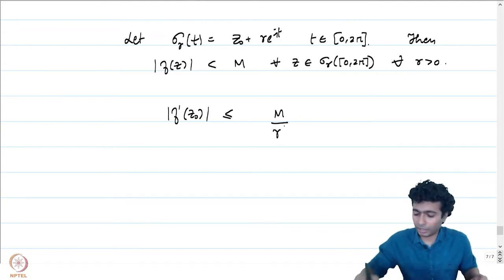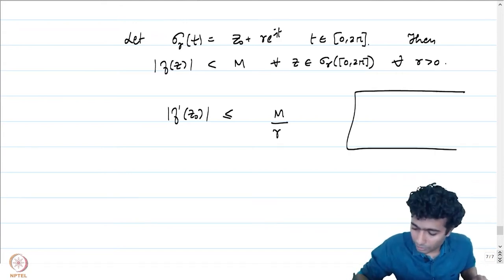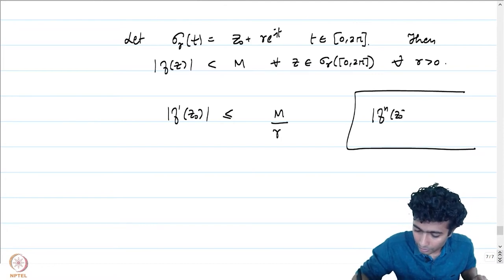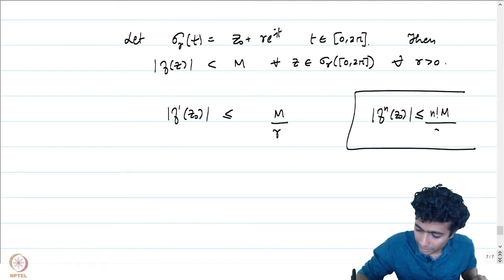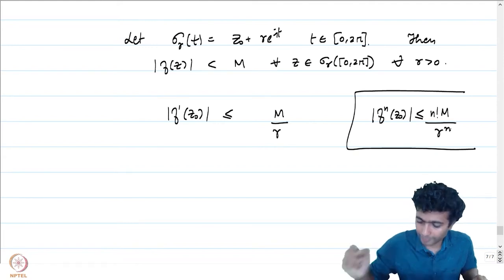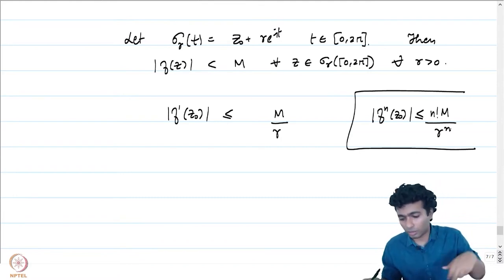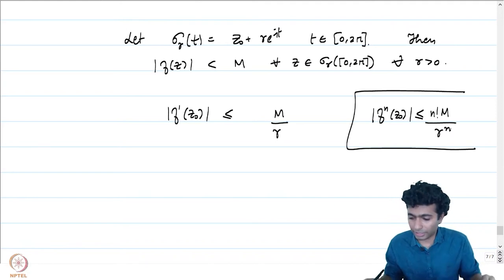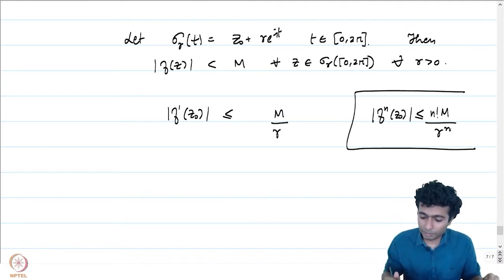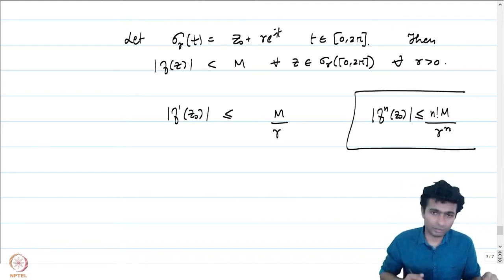The Cauchy inequality tells us that |f^(n)(z₀)| ≤ n! · M / r^n, where M is a bound of f on the circle of radius r around z₀. For n = 1 applied here, we have this estimate.